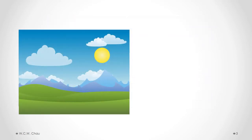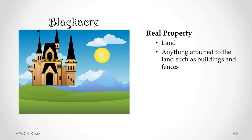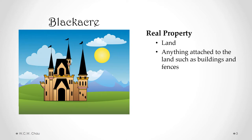Here we have a beautiful piece of land that we will call Black Acre. In law school, we always called a fictitious piece of land Black Acre — never White Acre, Pink Acre, or Purple Acre, just Black Acre. Black Acre is considered to be a piece of real property. Real property includes, most notably, the land, but it also includes anything attached to the land, such as buildings and fences.